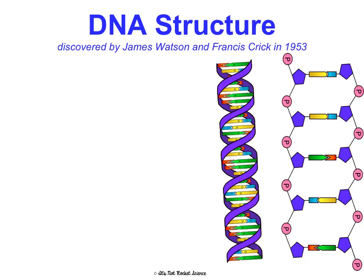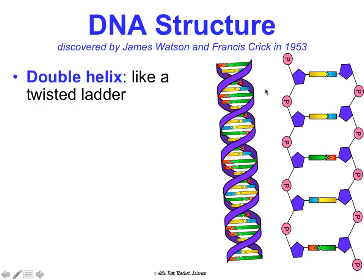DNA structure was discovered by James Watson and Francis Crick in 1953, but it wouldn't have been possible without imagery taken by Rosalind Franklin, who was working in the lab at the time. DNA structure can be summed up as a double helix — a twisted ladder — with double meaning two sides and helix meaning it's spun up.